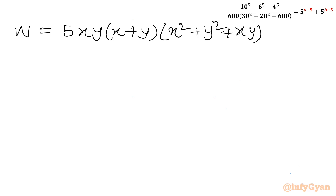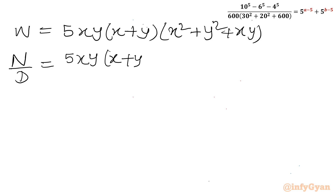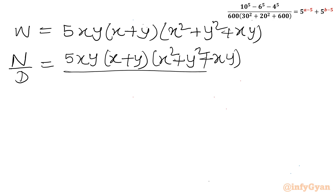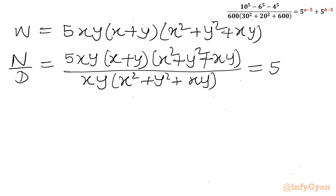So N over D equals: 5xy(x+y)(x²+y²+xy) divided by xy(x²+y²+xy), and the right hand side is 5^a + 5^b.